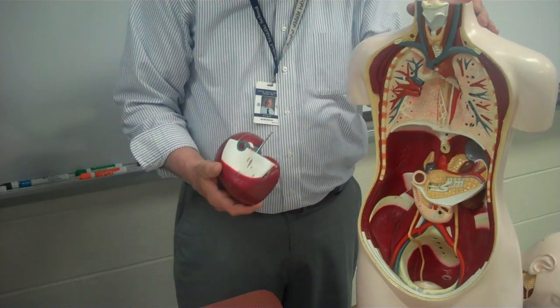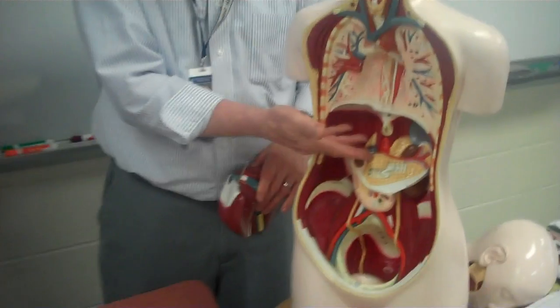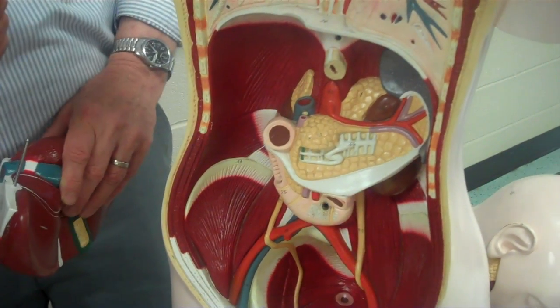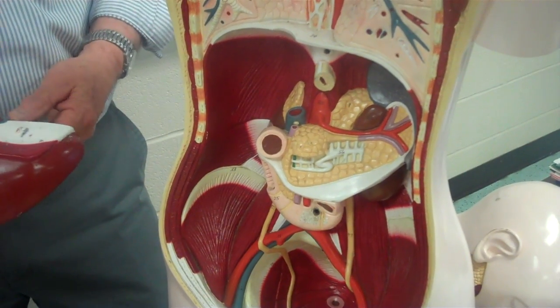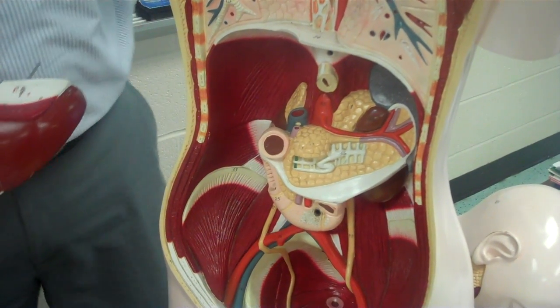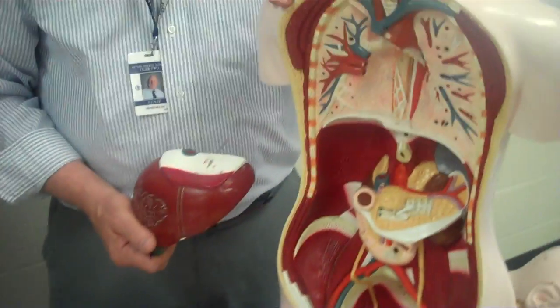Besides the glands in the mouth, the salivary glands, there's the pancreas that makes pancreatic juices that break down proteins. But the pancreas, the whole point, it secretes enzymes that go into the small intestine to help with the digestive process. So that's what the pancreas is for. Food does not pass through the pancreas but it's there to provide these digestive enzymes to help with the breaking down of the food material. And these enzymes are what speeds up the process.